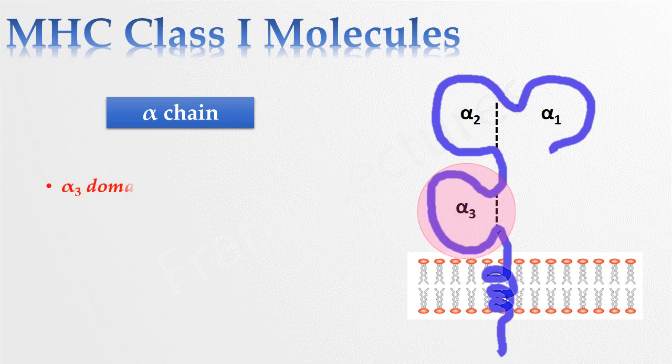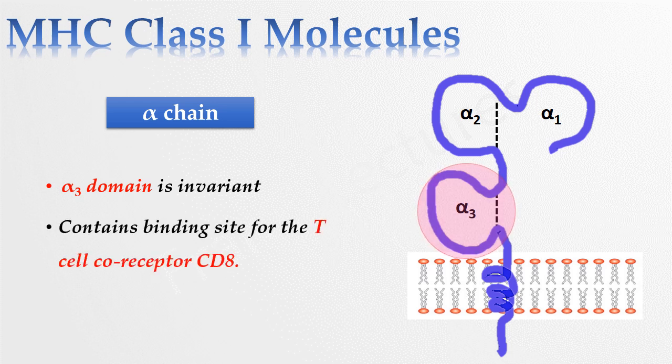This alpha 3 domain is invariant and contains binding site for the T cell coreceptor CD8. We will study about coreceptors and cluster of differentiation in separate video lecture.